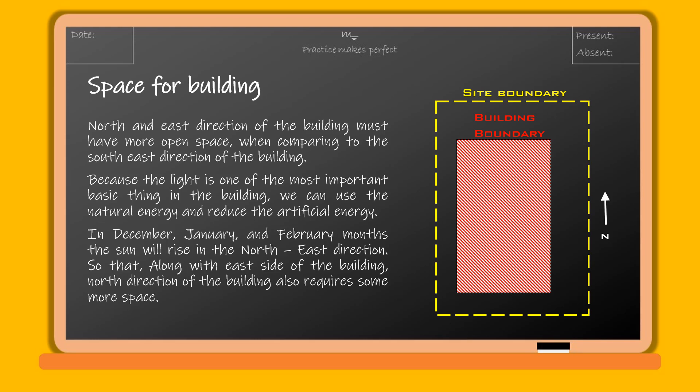We can use natural energy and reduce artificial energy. In December, January, and February, the sun will rise in the northeast direction, so along with the east side, the north direction of the building also requires some more open space.